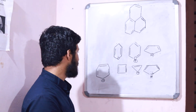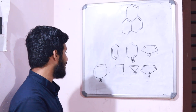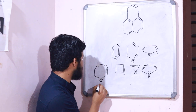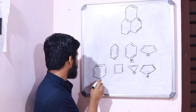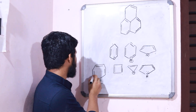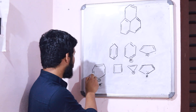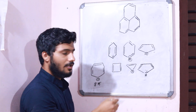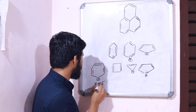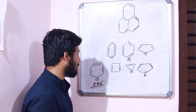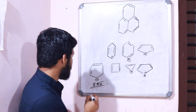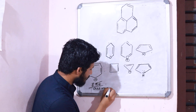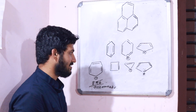Among the species given, this is the cycloheptatrienyl anion. This compound contains pi electrons: two pi, two pi, four pi, six pi, and the minus charge contributes two pi electrons, giving a total of eight pi electrons. So this species is anti-aromatic in nature.